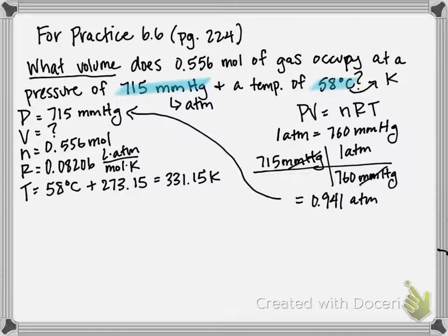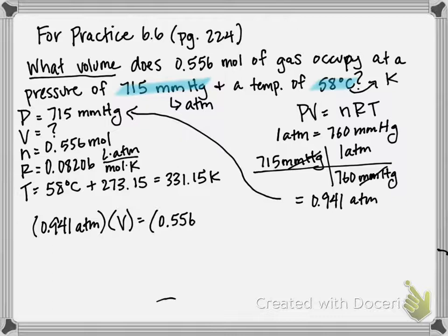So now I have everything. I can plug it into my ideal gas law and then solve for volume. So my pressure in atmospheres, 0.941 atm. Looking for volume, so I'm going to leave that. My moles, 0.556 moles. My R, always going to be 0.08206 liters times atmospheres over moles times Kelvin.